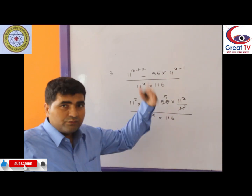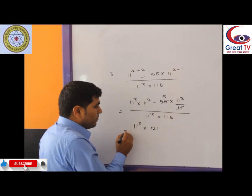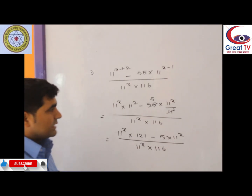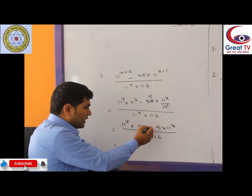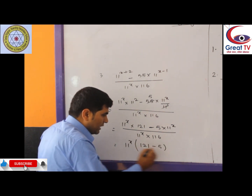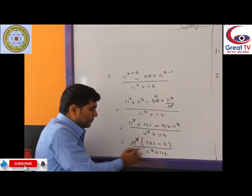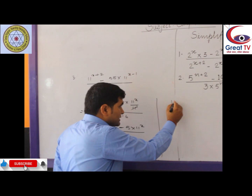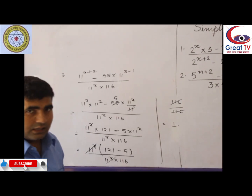Now, because that is the previous question — parallelly, now remaining: 11 power x into 121 minus 5 into 11 power x, divided by 11 power x into 116. We can take a common factor from the numerator — 11 power x is in both terms, separated by a minus sign. So we take out 11 power x; now remaining in the first term: 121 minus 5, divided by 11 power x into 116. We can eliminate those two. Now in the numerator, 121 minus 5 equals 116.